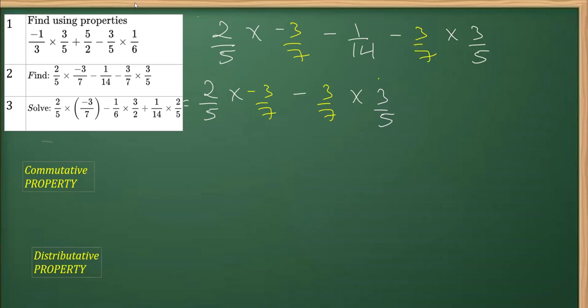So clearly the property that we have applied by rearrangement is commutative property. And I missed to write this -1/14, this will come here.